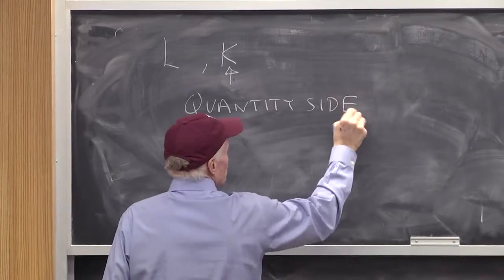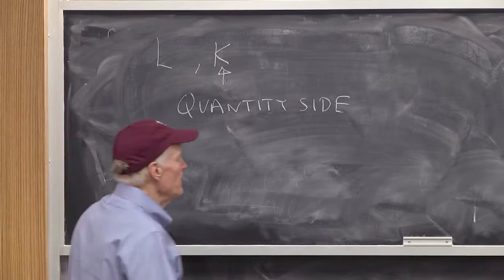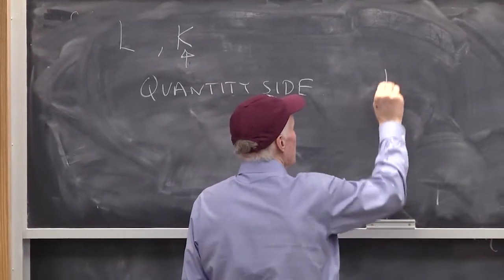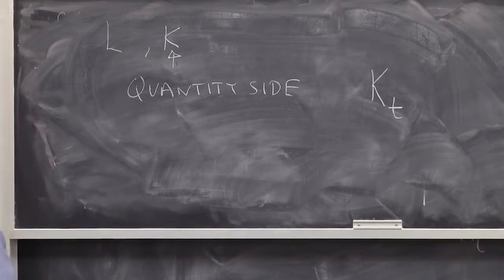On the quantity side, we want to think about there being a stock of assets, Kt. That's the amount of assets we have at day T.